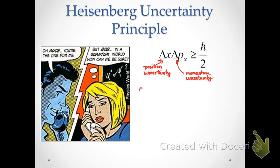What that means is that we cannot know both the position and momentum of a particle exactly, with arbitrarily high precision, simultaneously. We can only know them with specific uncertainties. Because the uncertainty product must be greater than or equal to h-bar over 2, if we know the position uncertainty, we can calculate the minimum uncertainty in momentum — but it cannot be zero.